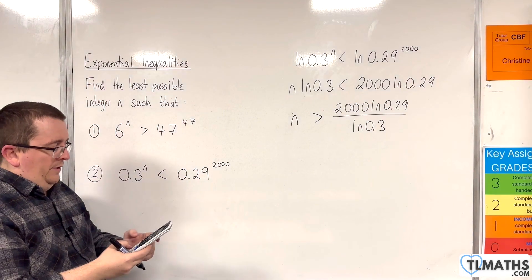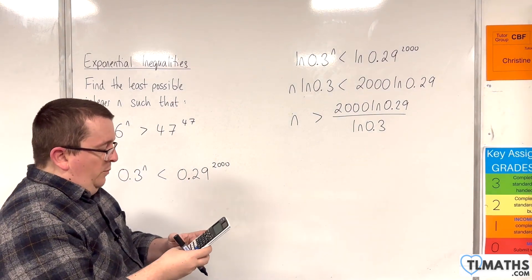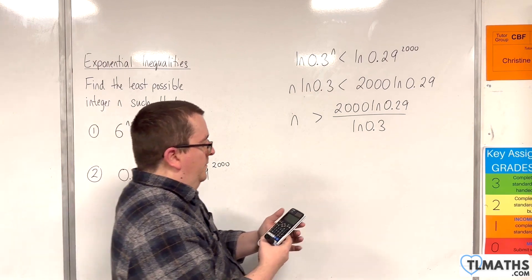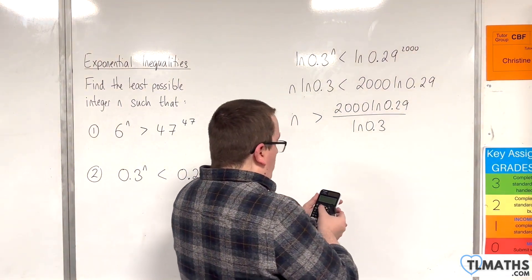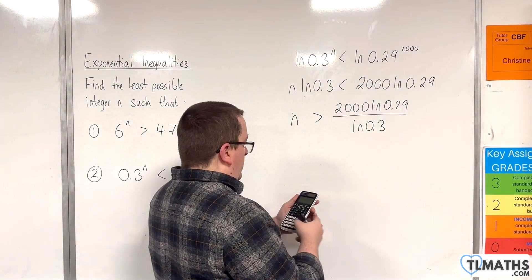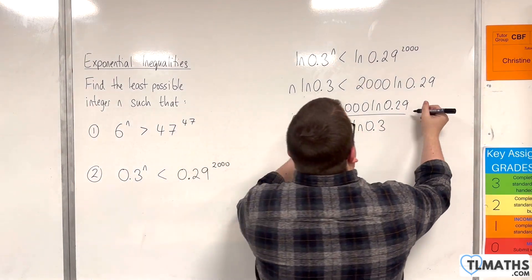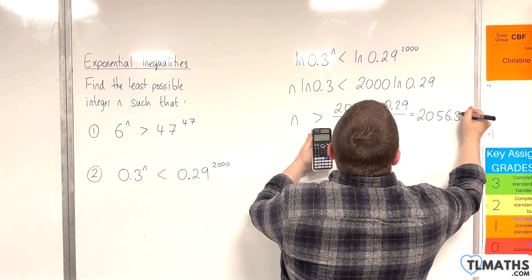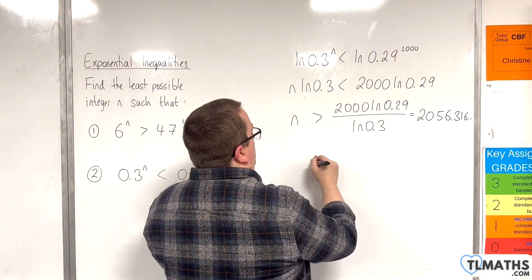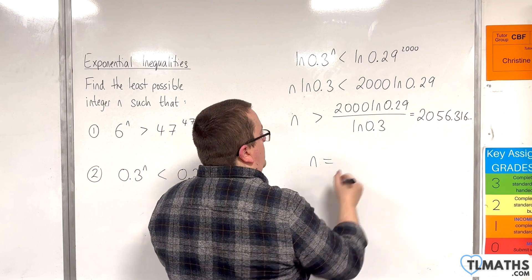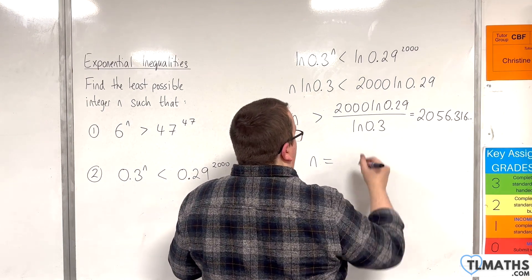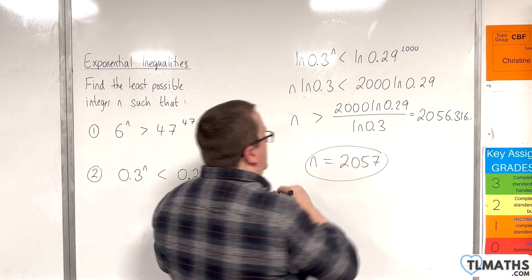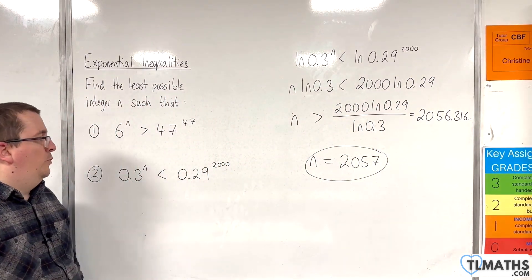So 2000 times the natural log of 0.29 divided by the natural log of 0.3 is 2056.316 etc. So the least possible value of n will be the next integer up from that, so 2057. And that is the solution for number 2.